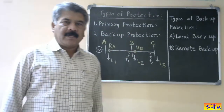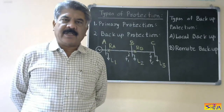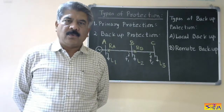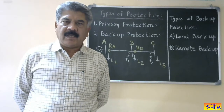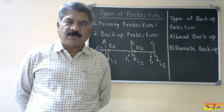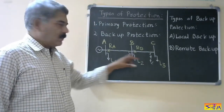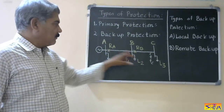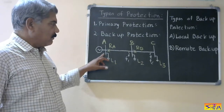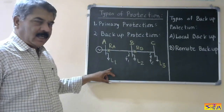Let us see what is primary protection. Primary protection is the essential or main protection provided to every equipment of the power system, and it operates in the minimum possible time. Now let us consider this simple system — two radial feeders with a source at one end only. There are two sections: A-B and B-C.